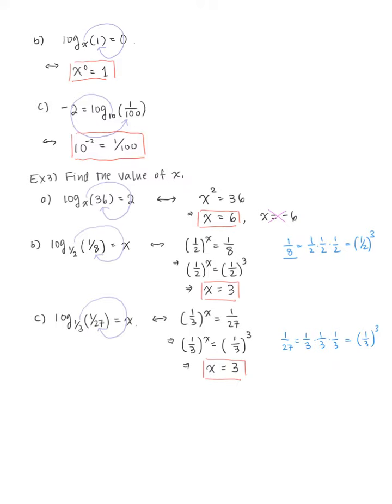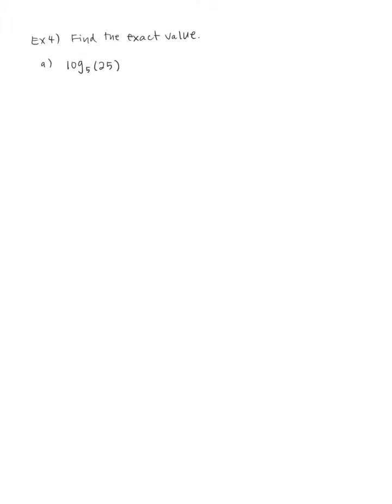Example 4: find the exact value without using a calculator. Part a: log base 5 of 25. Set this equal to x, so 5 to the x equals 25. Since 25 is 5 squared, both sides have base 5, so we equate the exponents and get x equals 2.